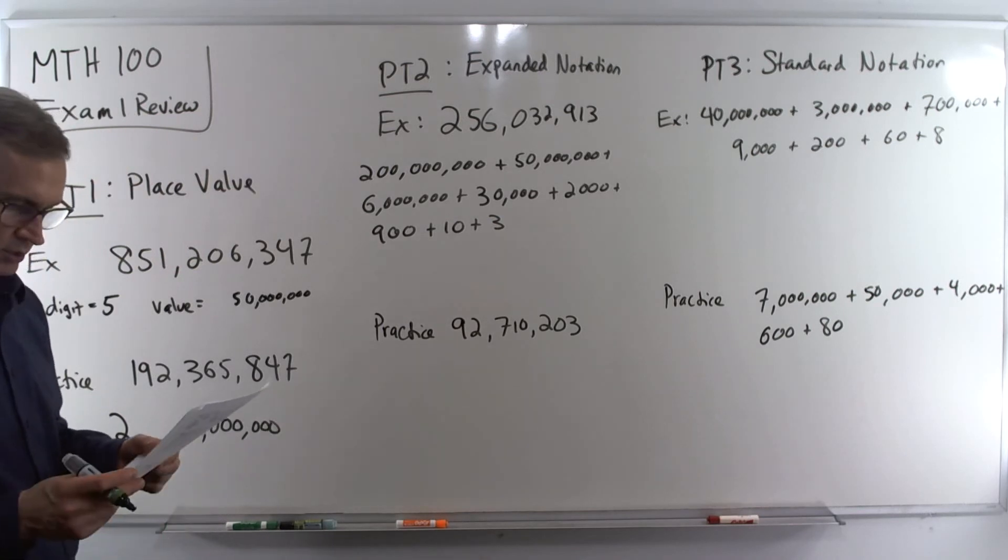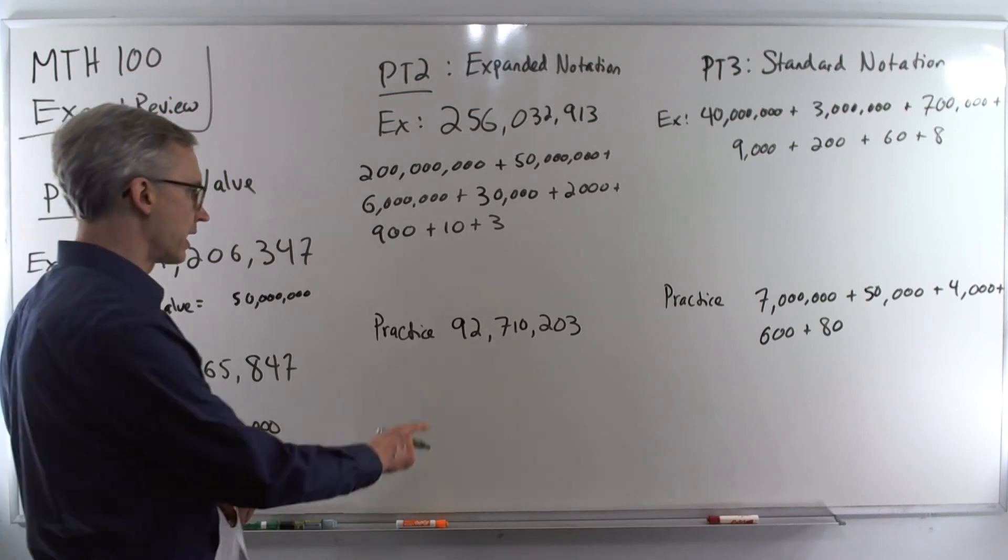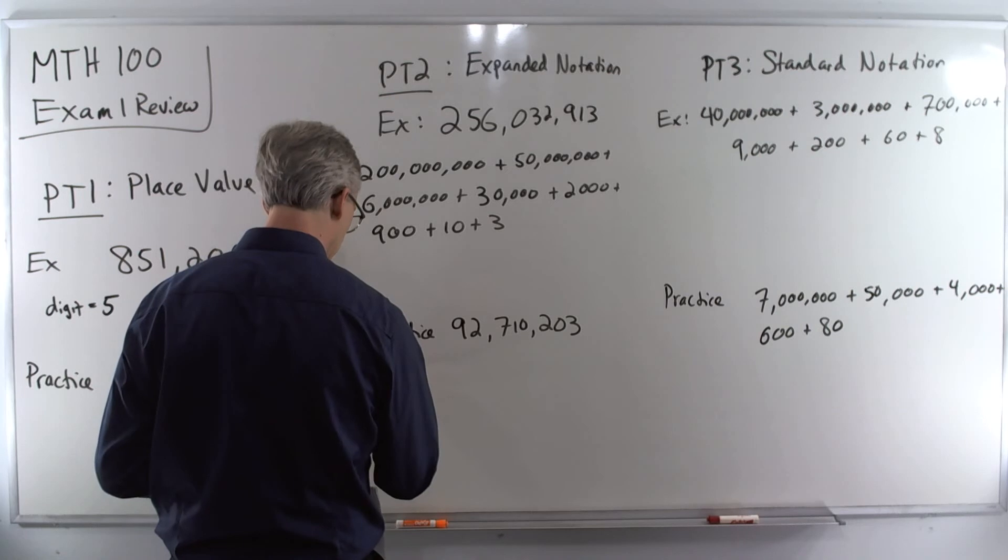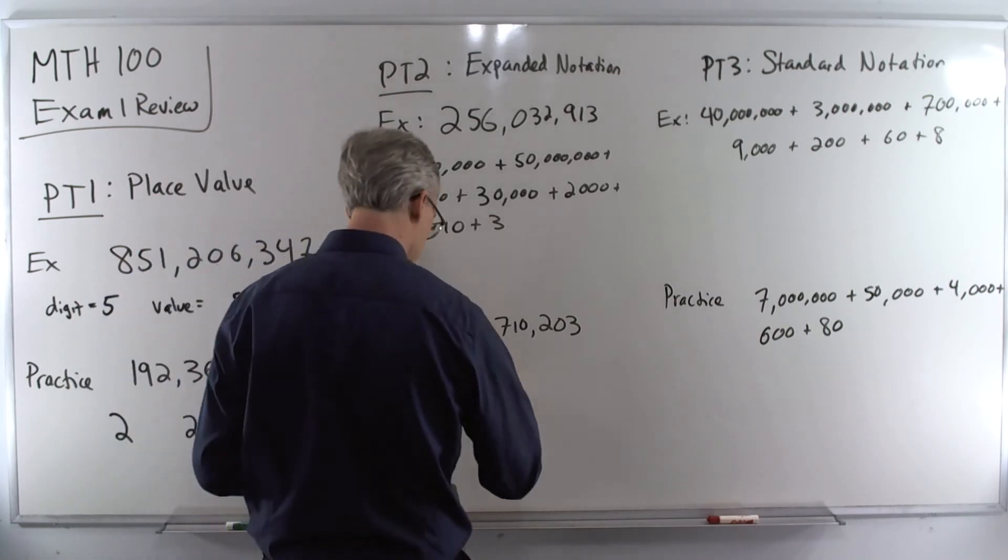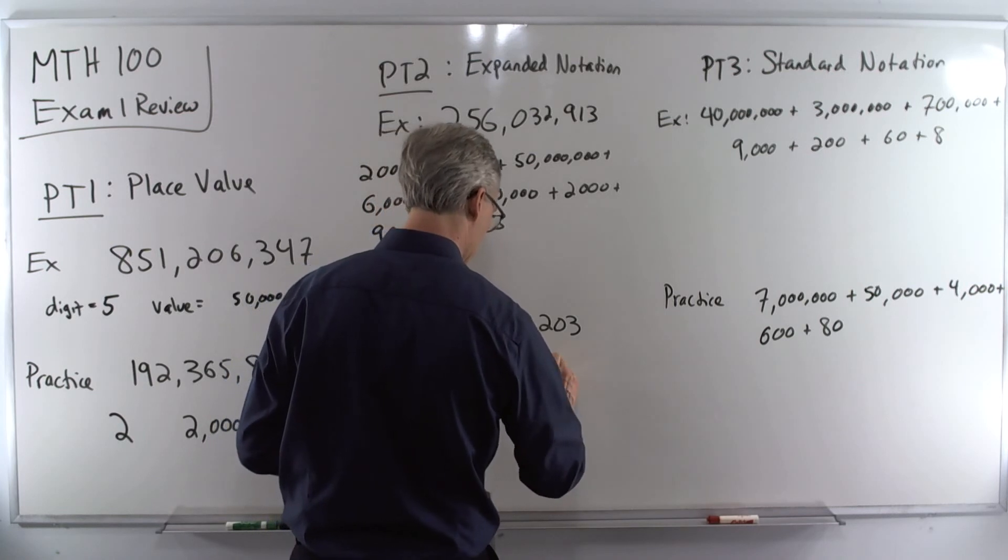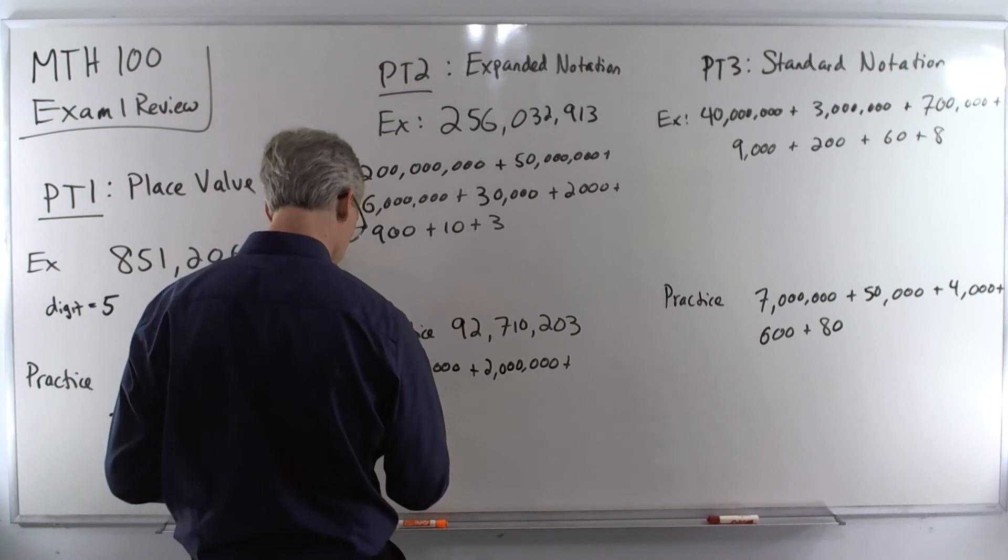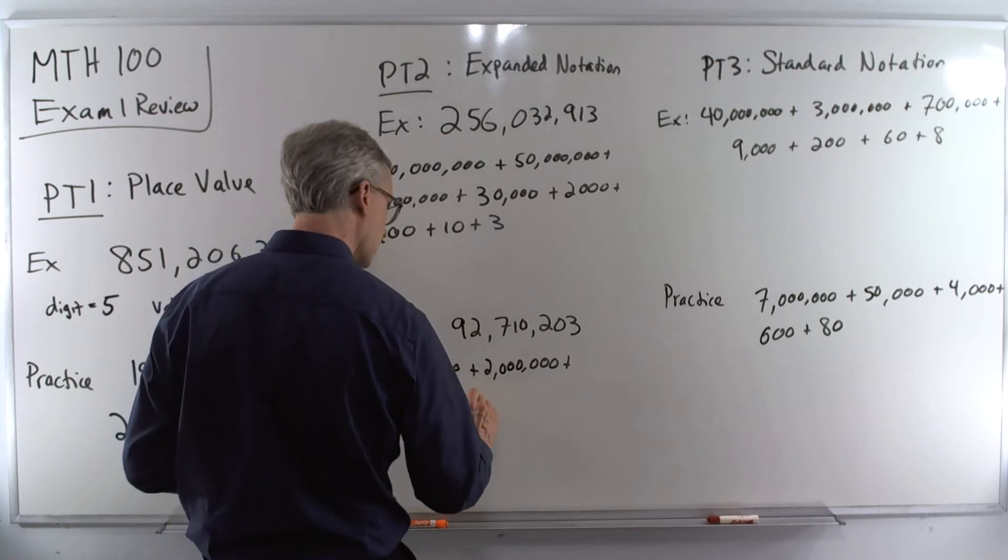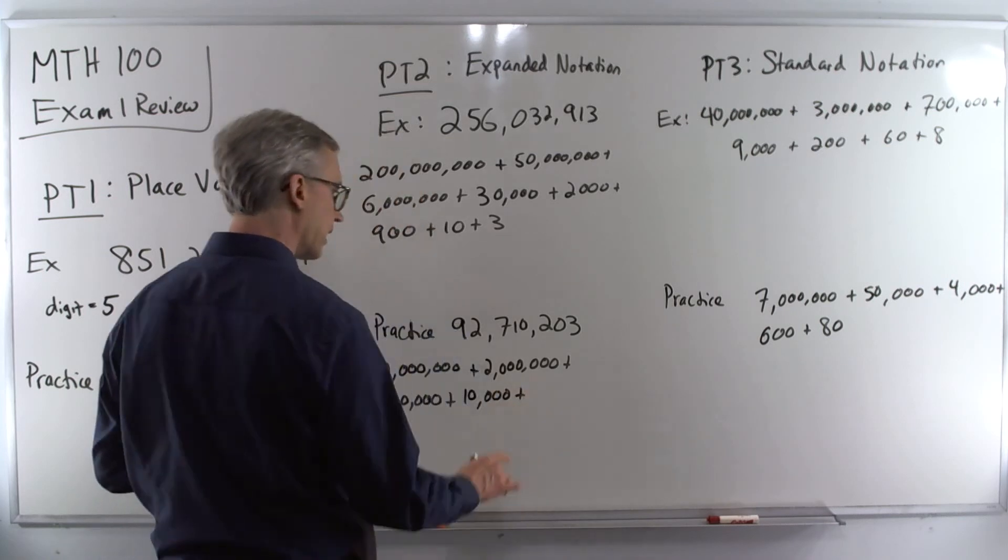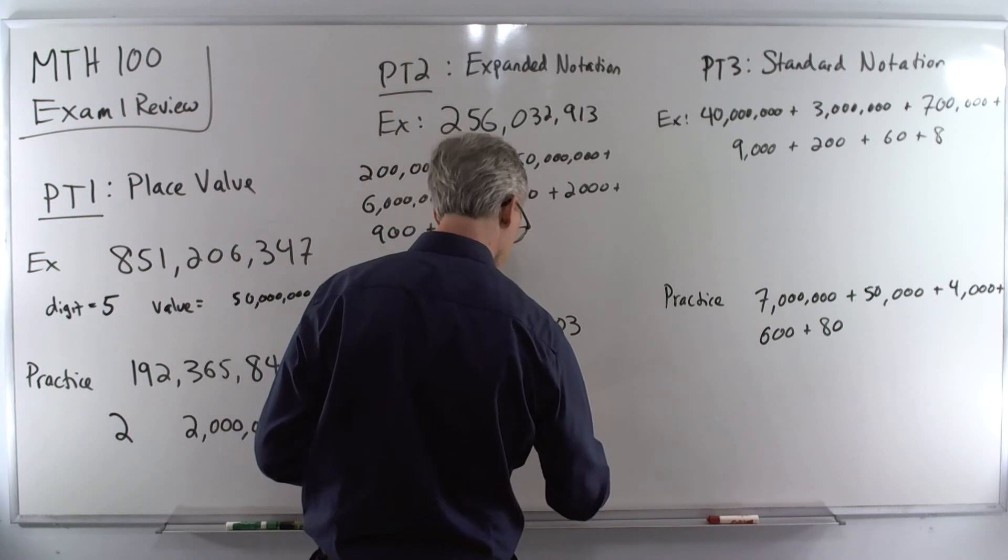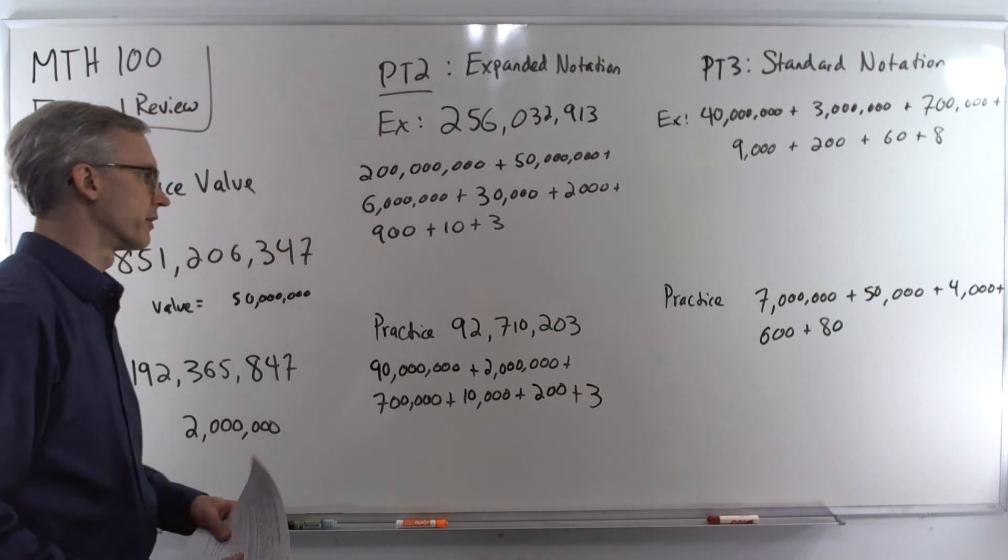Practice. So we've got a 9 in the ten millions place. So that is ninety million. 2 in the millions place. Two million. 7 in the hundred thousands place. 1 in the ten thousands place. So we've got ten thousand there. And a zero. So we'll skip that. Go over to the 2. That's two hundred. Skip the zero. And put a 3 on the end.